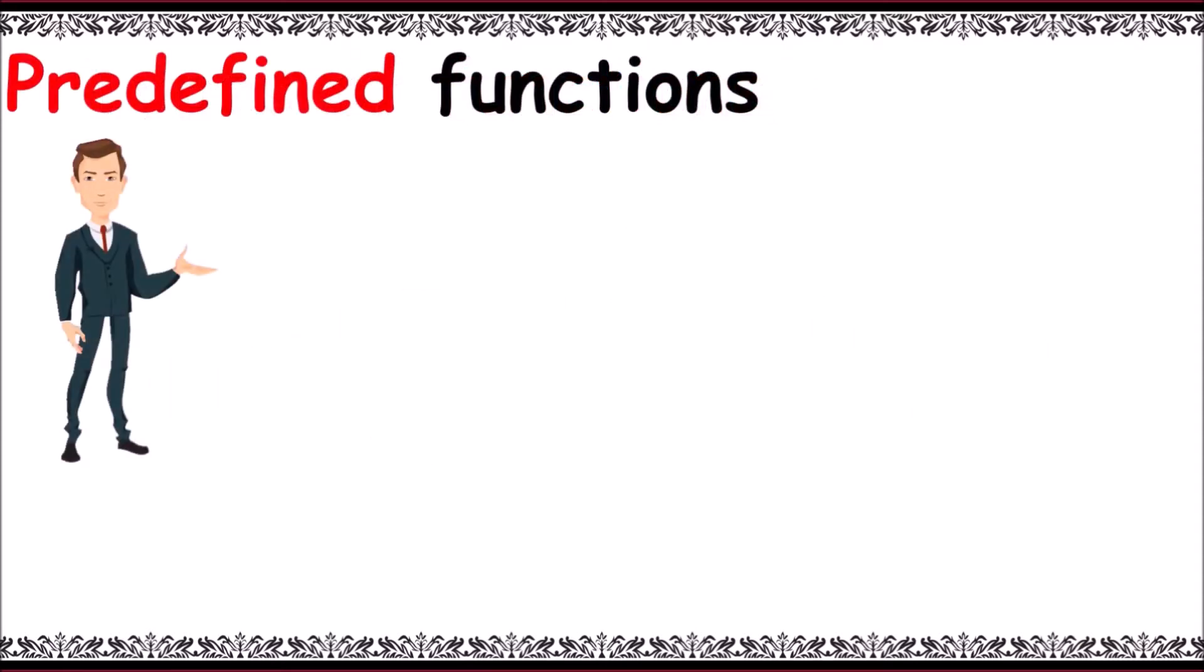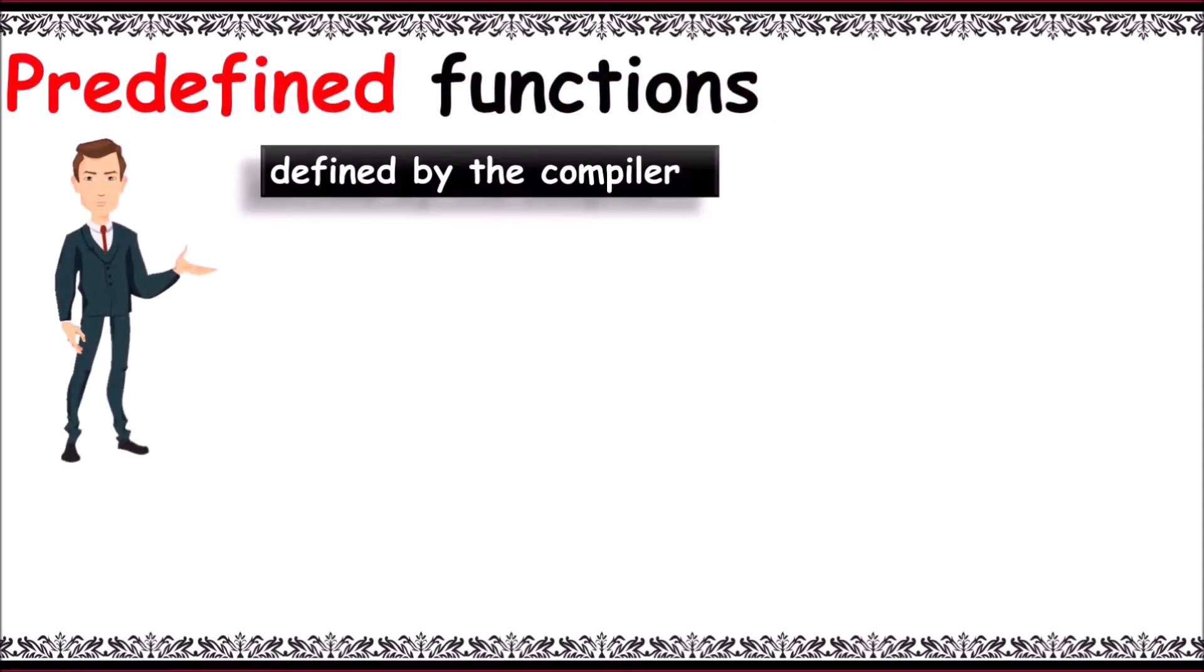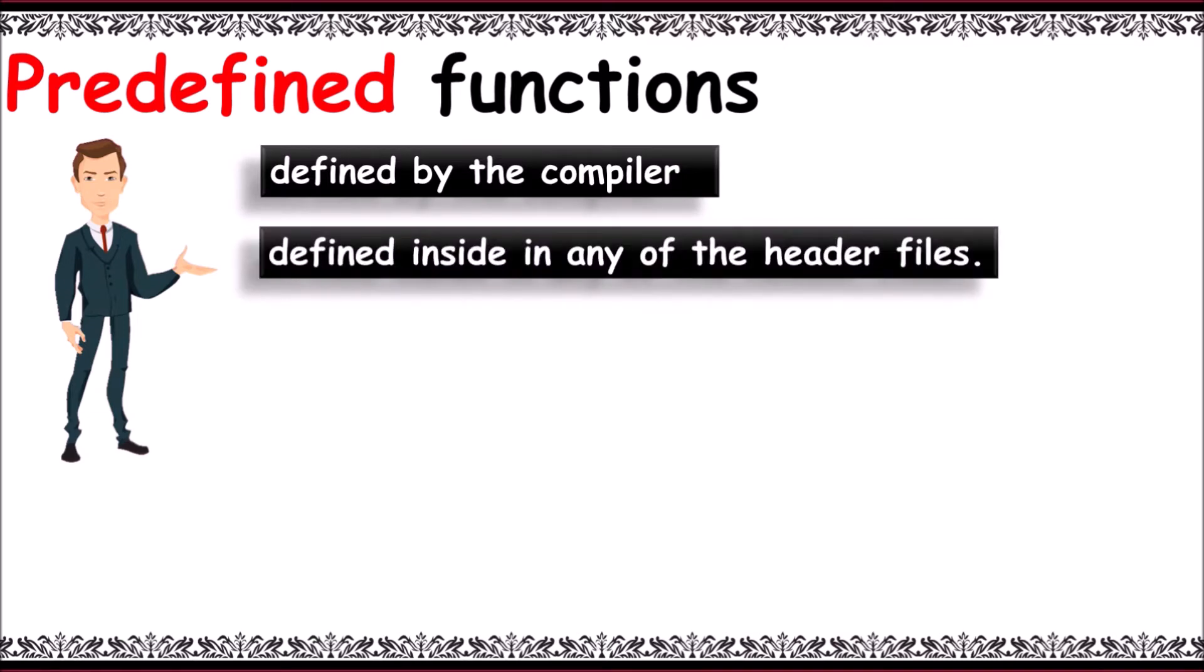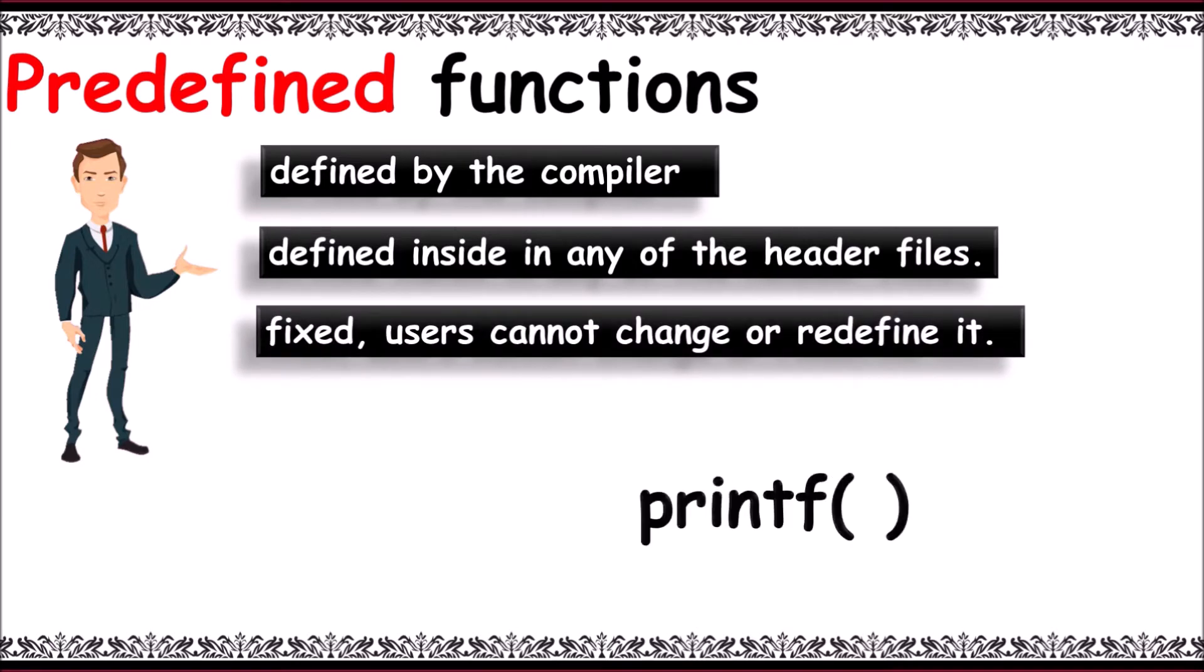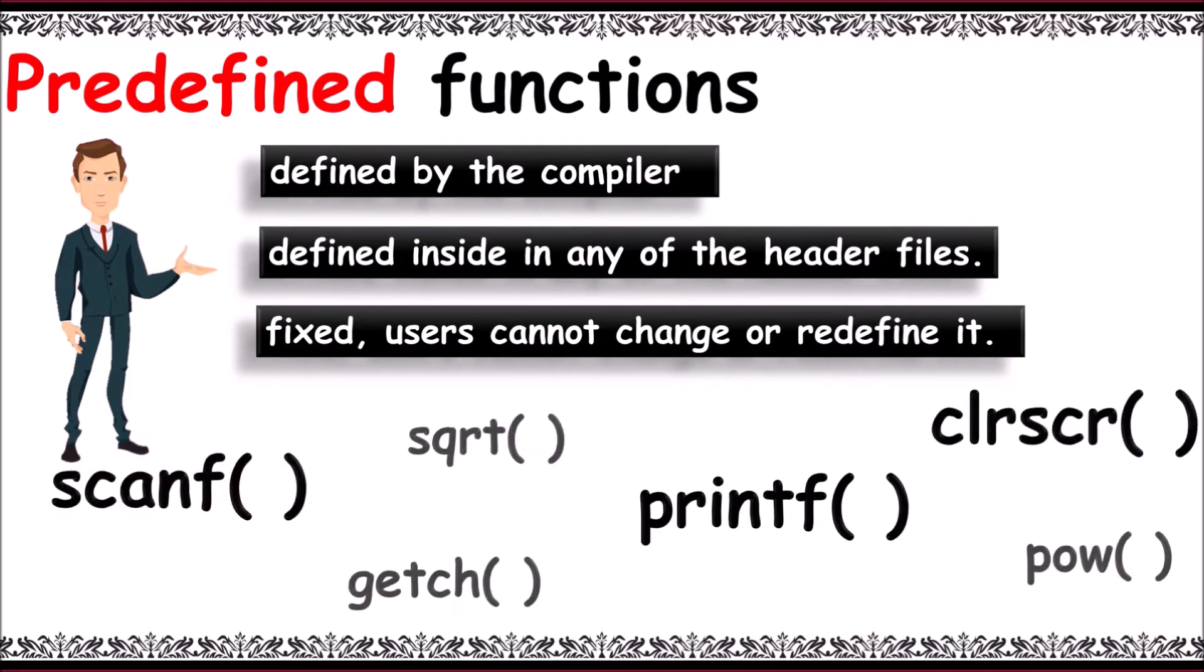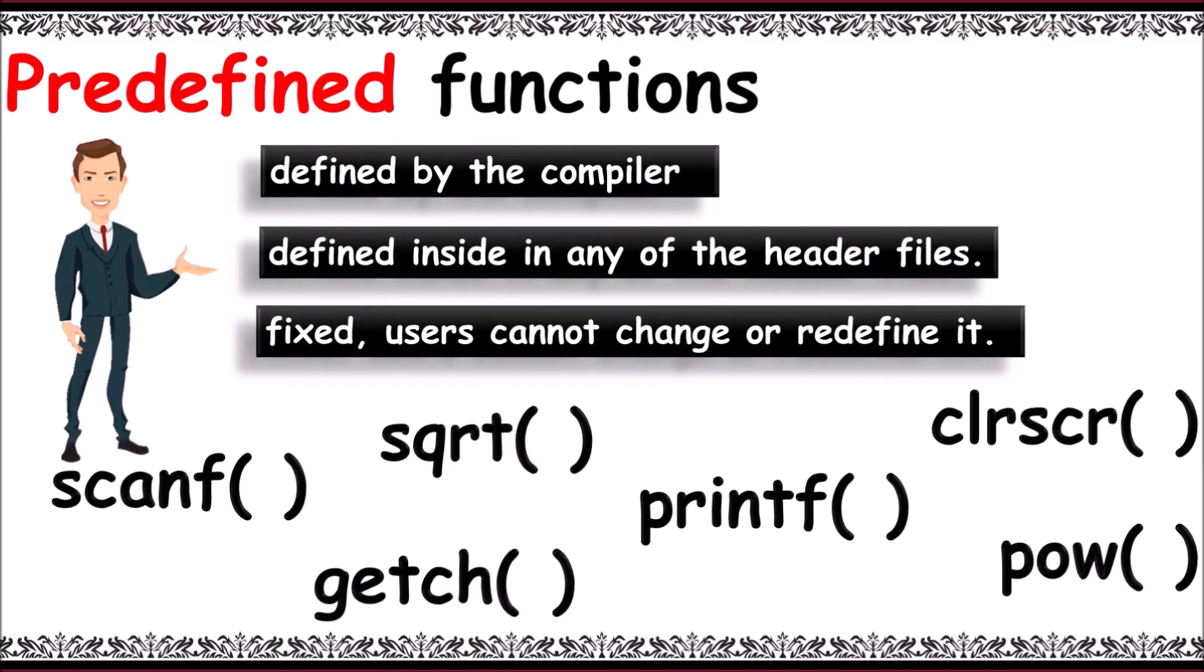In predefined functions, they are defined by the compiler with names. They are defined inside the header files. They are fixed and users can't change them. For example, printf is used to print contents on the screen, and there are certain functions like scanf, clrscr, sqrt, getch, power, etc.